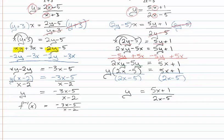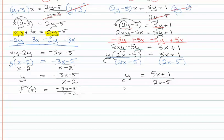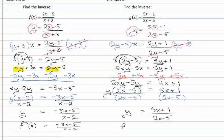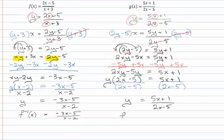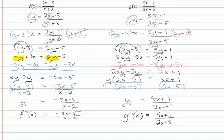Remember that this is the inverse function, so we would write it as f or in this case g of x. And since it's g of x in the original, it's going to be g inverse of x is equal to 5x plus 1 over 2x minus 5.